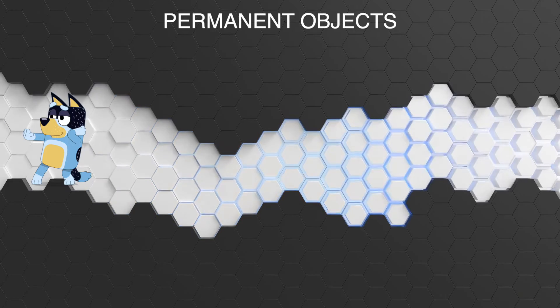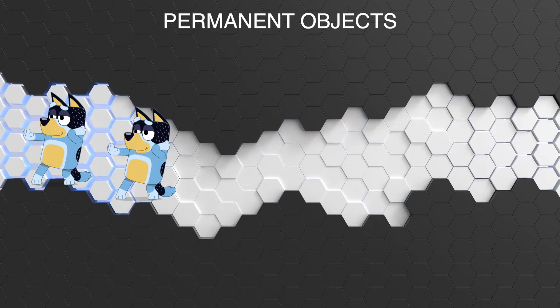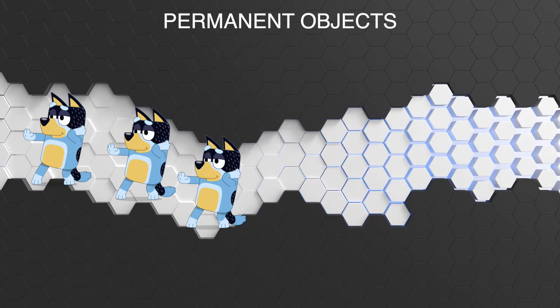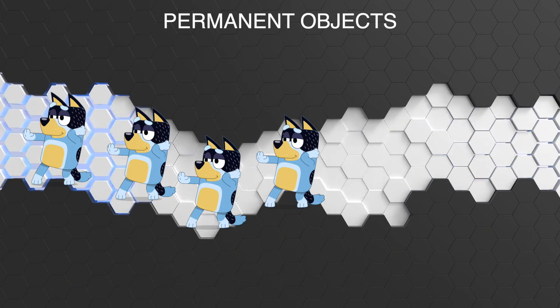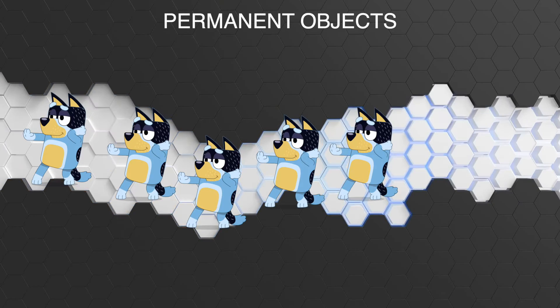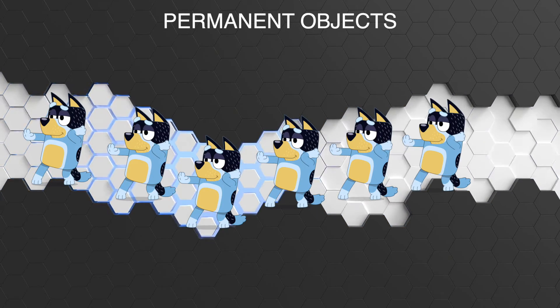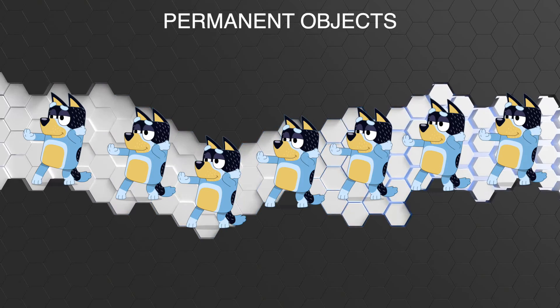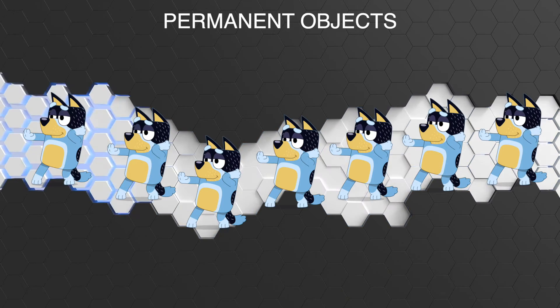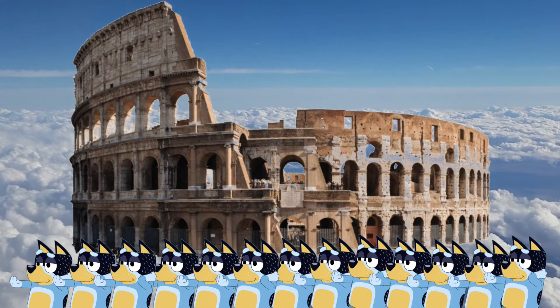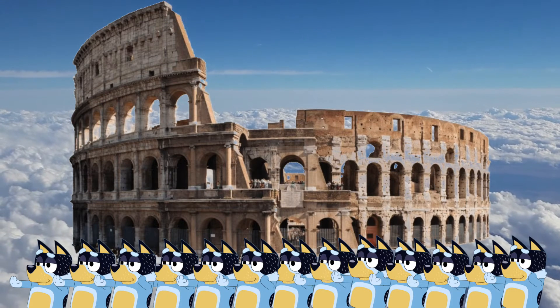Permanent objects are characters that return briefly throughout a story and at best have consequences for the story beyond just passing the baton to the main characters, and also have an impact on the main characters in a meaningful way, but at least have some kind of role as the story continues. The permanent objects are really the foundation of a story, and the more distinct they are from the main characters, the better.